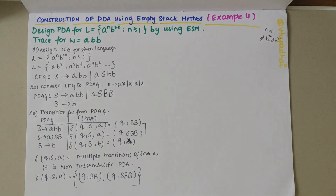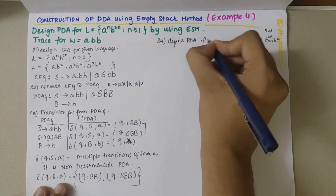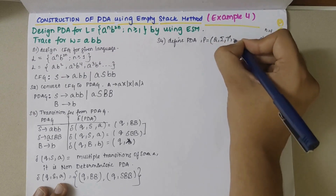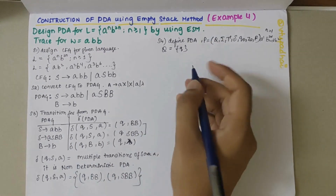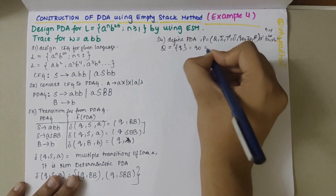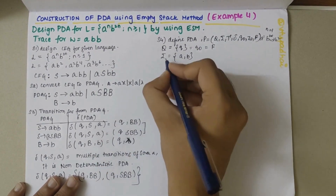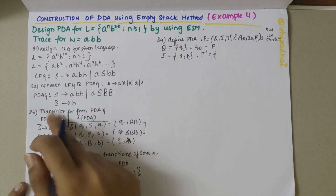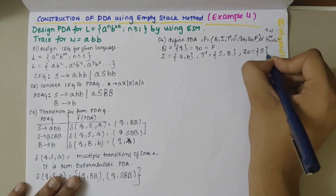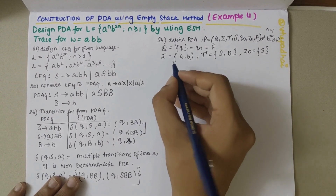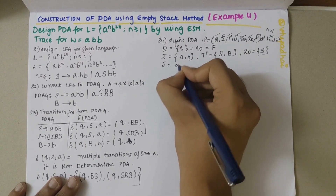My fourth step is to define the PDA formally as P = (Q, Σ, Γ, δ, q₀, Z₀, F). Here Q = {q}, which is both the start and final state. Sigma, the input alphabet, is {a, b}. Tau (stack alphabet) includes S and B. Z₀, the start stack symbol, is S. The transition function is as defined in step 3.